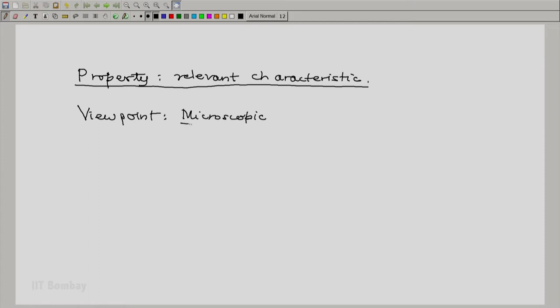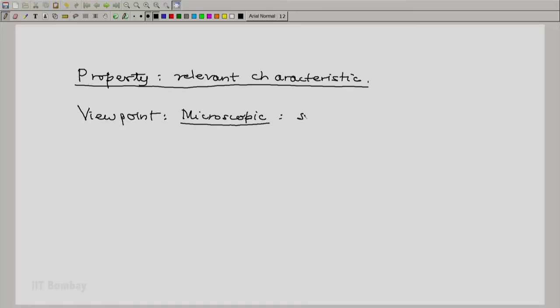So let us look at the microscopic approach. The microscopic approach is the typical approach of a physicist or a chemist. Here we assume that a system is made up of a collection of a large number n of particles. What is the order of n? Very large, 10 raise to 20, 10 raise to 25, of the order of the Avogadro number.